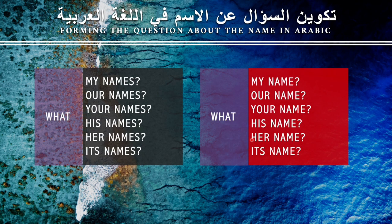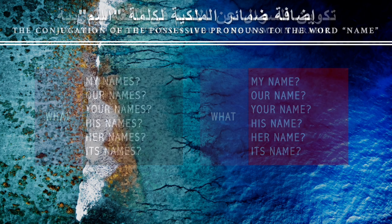Now, we end up with basically three words to be able to form the question about the name in Arabic. First, the interrogative word — 'what.' Second, the noun — 'name' or 'names.' And third, the possessive pronouns that need to be conjugated to the word 'name' or 'names.'